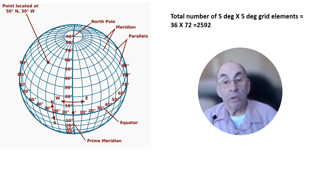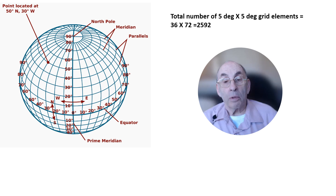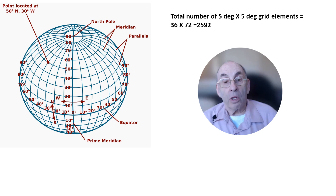To compute the upper limit on the contribution of heat islands to the average global surface temperature, we will assume that 1% of the grid elements have a daily average temperature that is 1.9 degrees centigrade more than the average daily temperature in the rural parts of the grid element. Most likely the average daily temperature in those grid elements isn't that much warmer, but this assumption will allow us to put an upper limit on how much the heat island effect can contribute to global warming.